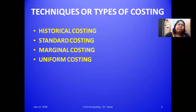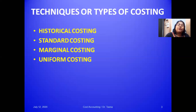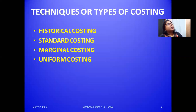The last technique is uniform costing. It is not a different type of costing, but it is a policy for different industry units to follow a specific type of costing uniformly across all units to facilitate comparison and assess the comparative performance of each firm. By highlighting weak spots, remedial actions can be taken by the management, resulting in overall improvement in performance throughout the industry.